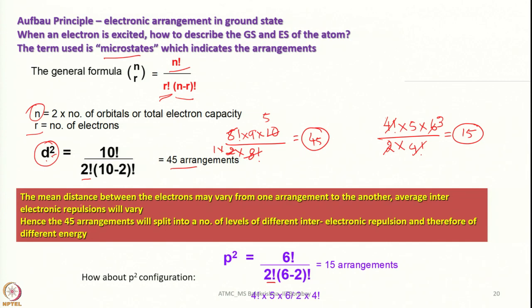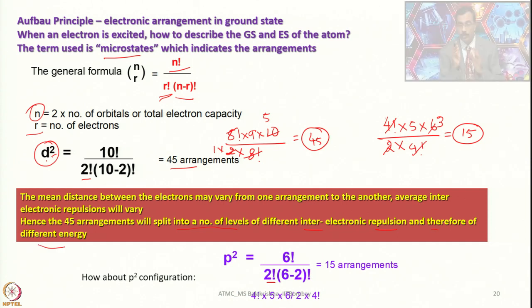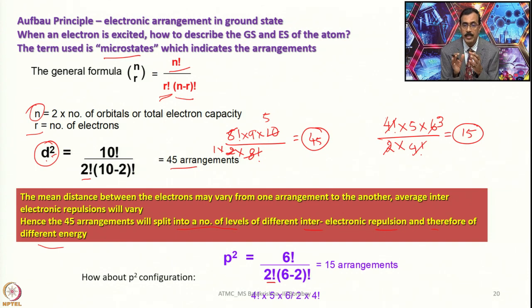The mean distance between the electrons may vary from one arrangement to another; average inter-electron repulsion will also vary. Hence, the 45 arrangements will split into a number of levels of different inter-electronic repulsion and therefore of different energies. When we consider all possible arrangements, the energy of those transitions will vary accordingly.